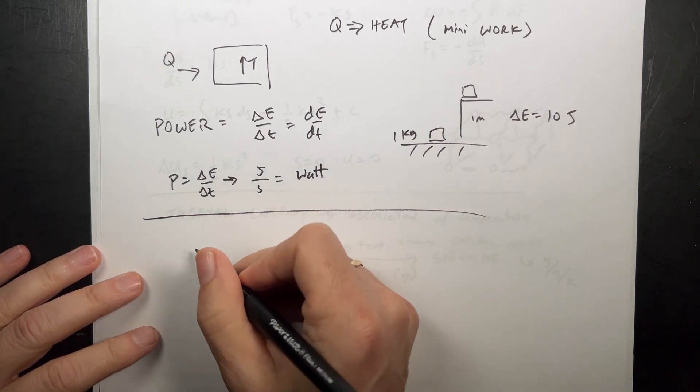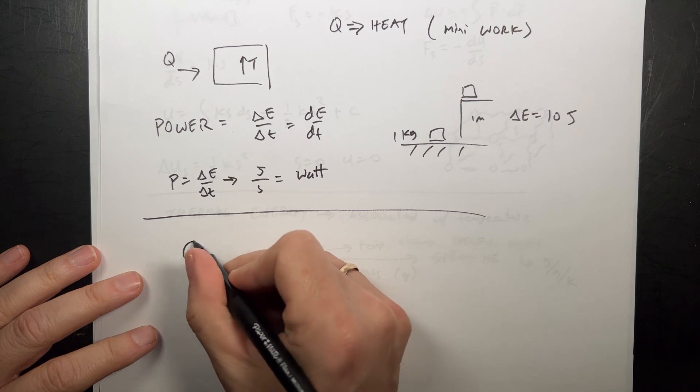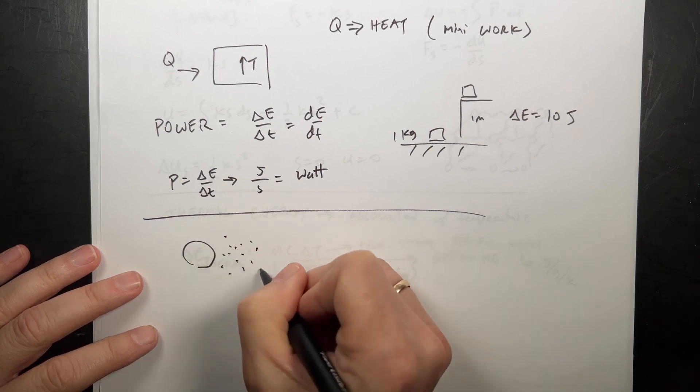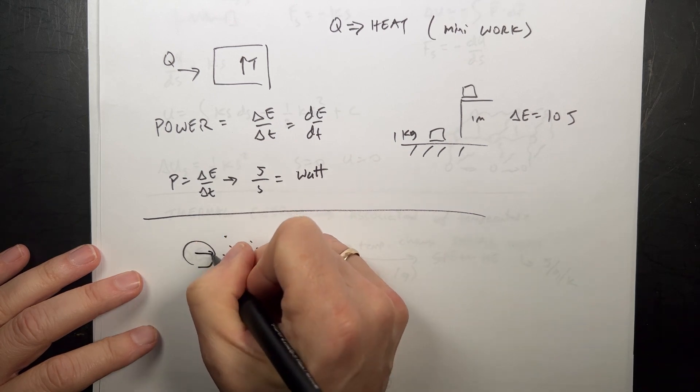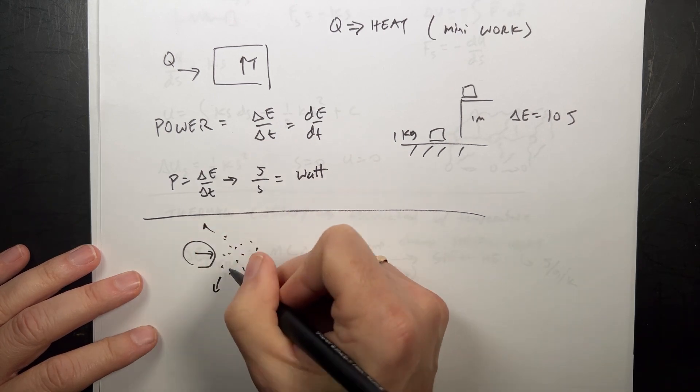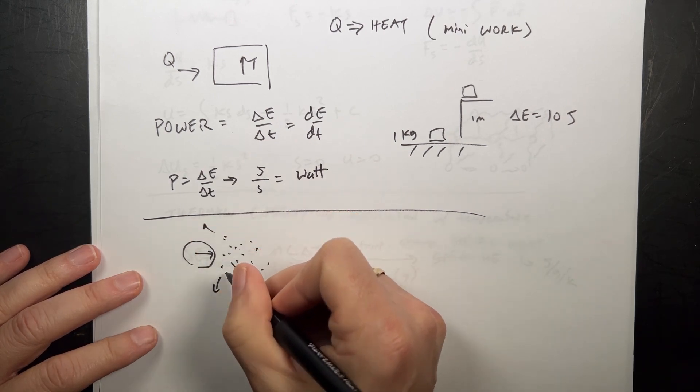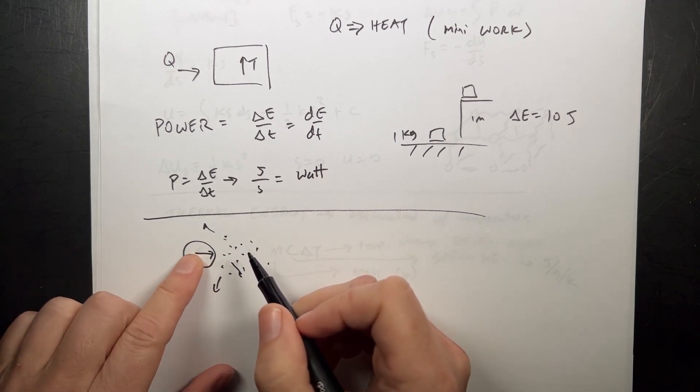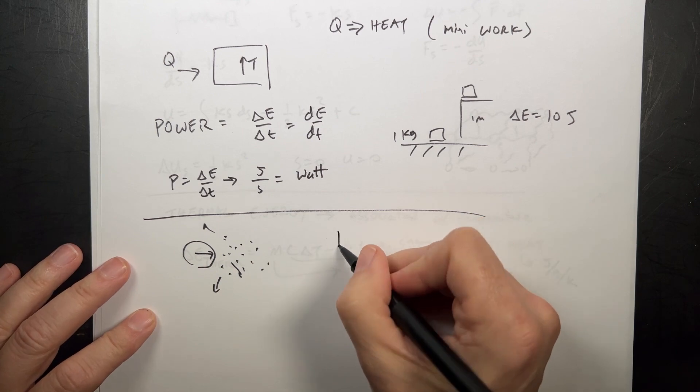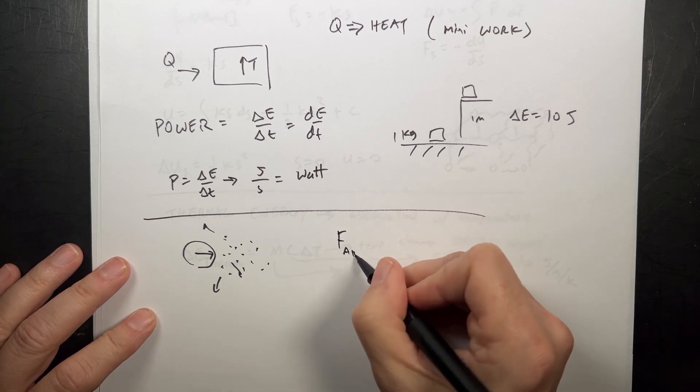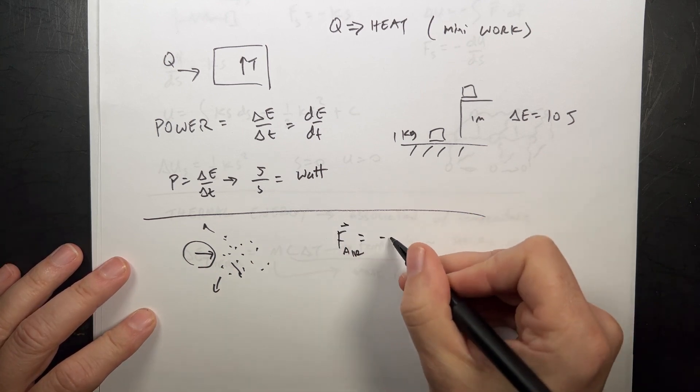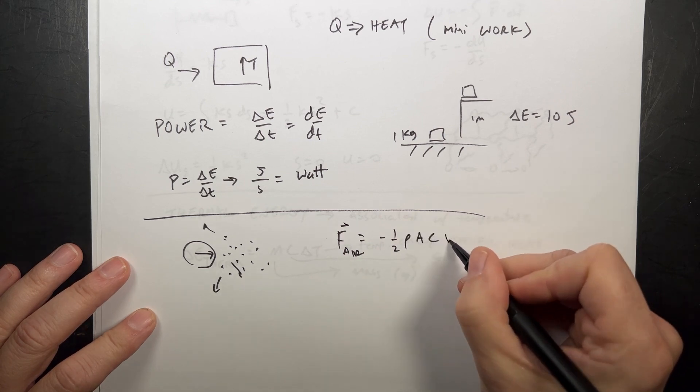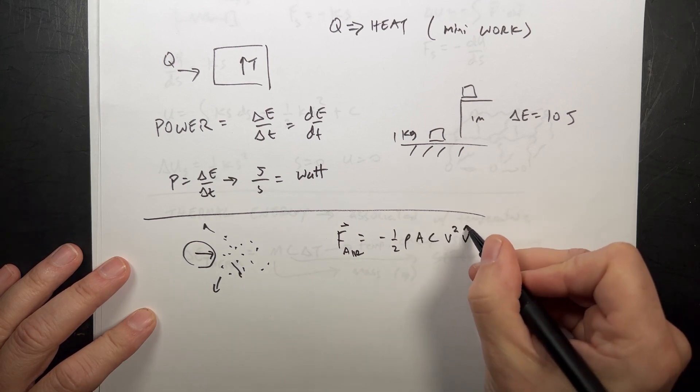Finally, we have this last idea of air resistance. If you have a ball moving through air, air is a bunch of particles. If this is moving, these are all going to deflect. When these particles of air change momentum, they require force, which means they exert a force on this. We get the following for an air resistance force: negative one half rho A C V squared V hat.